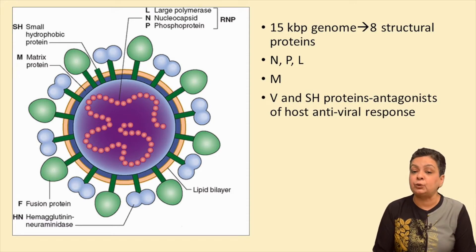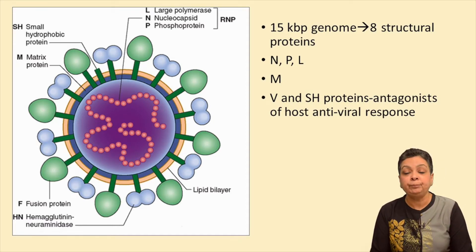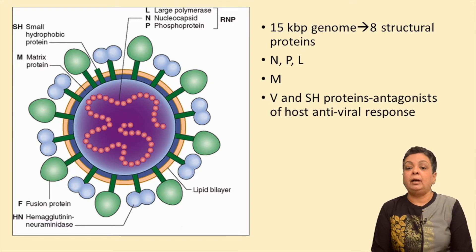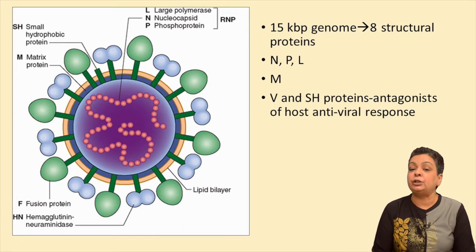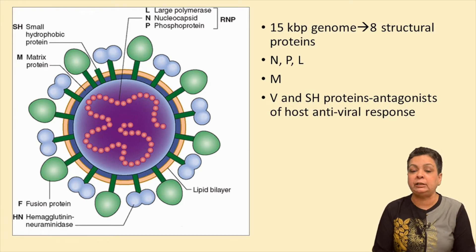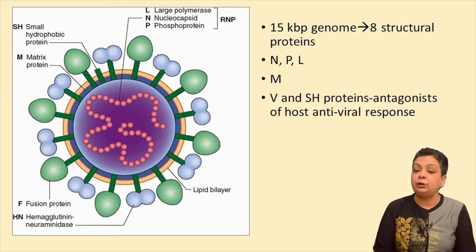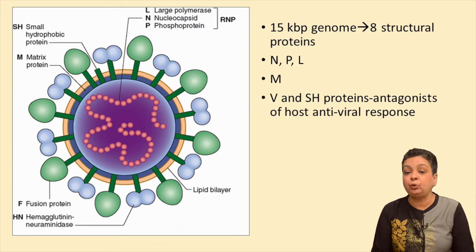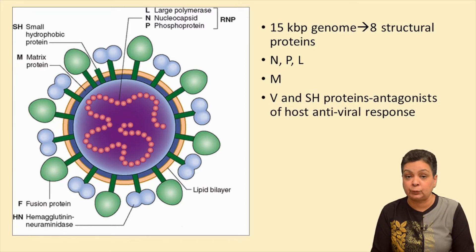These three structural proteins are associated with the RNA genome. Next is the matrix protein, the M protein, which forms a layer just beneath the lipid envelope of the mumps virus. There are two small proteins, V protein and the SH protein, which are antagonists of the host antiviral response.